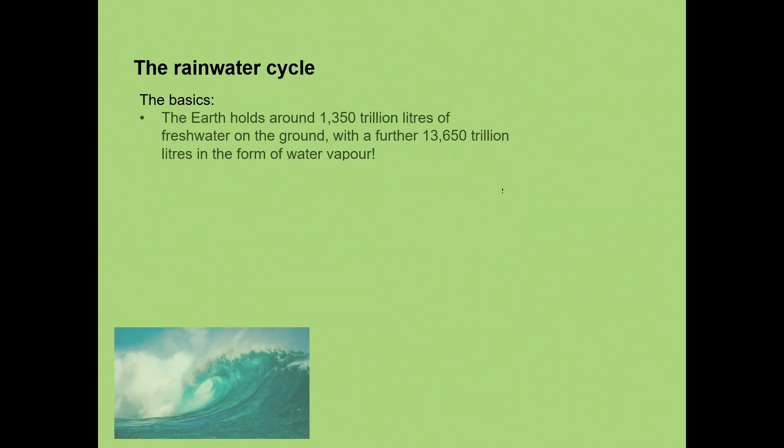Right, so now we're going to cover a little bit more. We're going to start looking at what water and how it is on the earth. So the earth holds 1,350 trillion litres of fresh water on the ground. That's a lot of water, and a further 13,650 trillion litres in the form of water vapour.